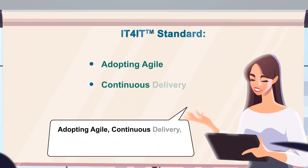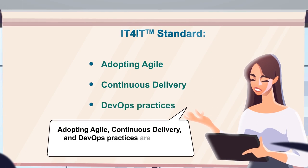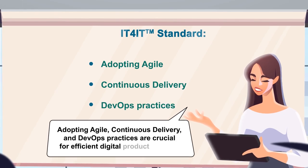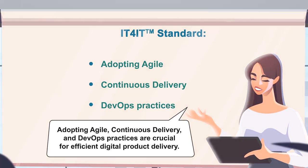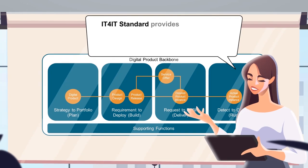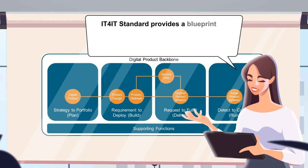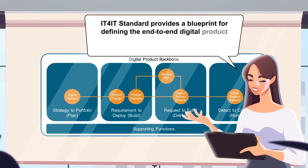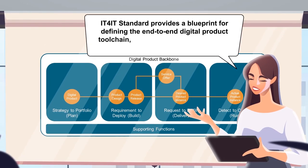Ultimately accelerating flow and reducing the cost and complexity of digital product delivery. Adopting agile, continuous delivery and DevOps practices are crucial for efficient digital product delivery. However, fragmented and disconnected tools often impede the process.